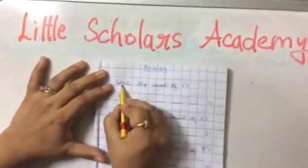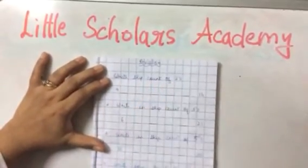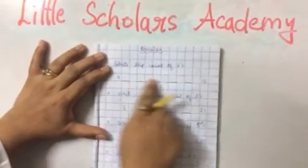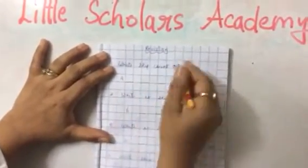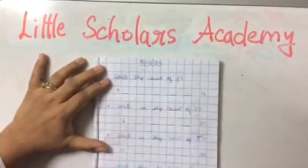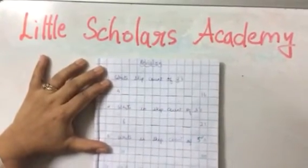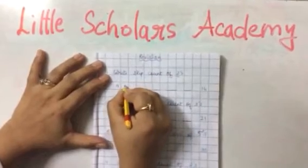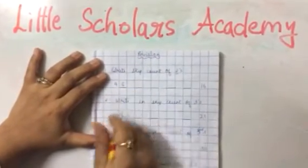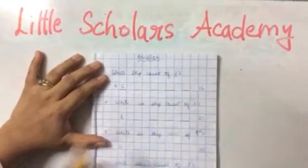First question. Write skip count of twos. Abhi may ne 4 se like 16 tuk aapko ye numbers blanks diye hain. Jis mein humnye two skip kerke numbers likhne hain. Four. Four ke baad kya aayega? Aagar ham two ki skip counting ker rahe hain. Correct. Six. Six ke baad? Very good. Aaisi karke yaap finish kerou.